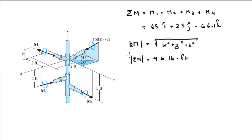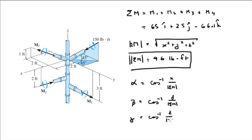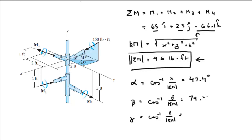That's the magnitude of the resultant couple moment. Now to find the coordinate direction angles: take the inverse cosine of each component divided by the magnitude — don't forget the negative sign where applicable. The coordinate direction angles are α = 47.4°, β = 74.9°, and γ = 133.5°.